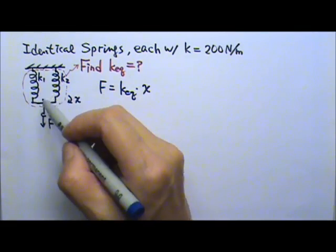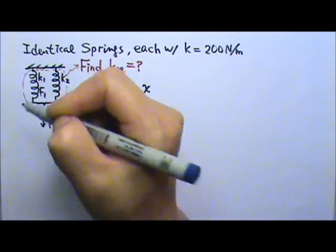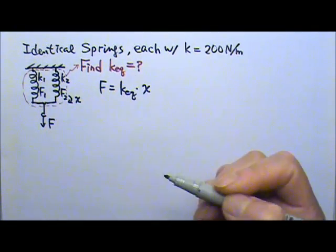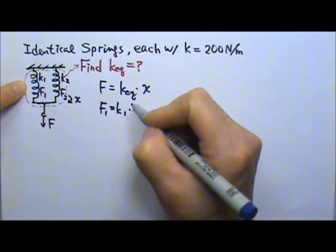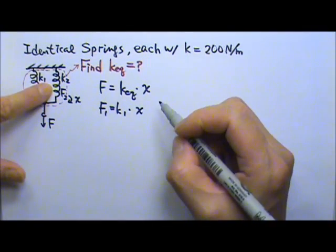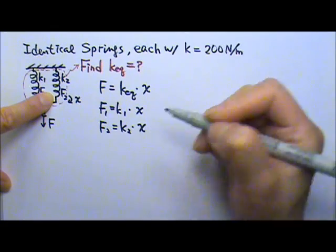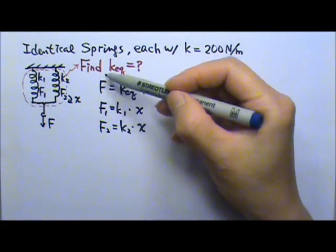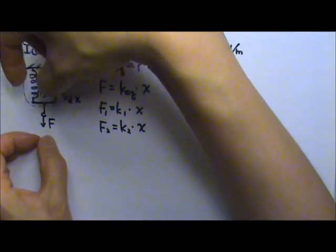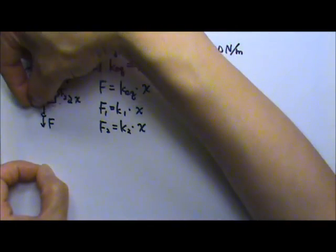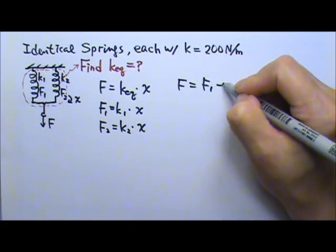If we look at the individual springs, the force in each spring is not the same as F. So let's say the force in the first spring is F1, and the force in the second spring is F2. For the first spring, F1 equals K1 times x. For the second spring, F2 equals K2 times x. The three forces are related because on one side I have force F pulling, and on the other I have forces F1 and F2, which means F equals F1 plus F2.